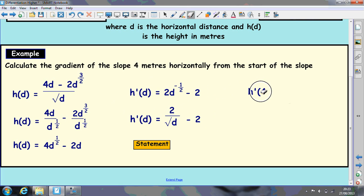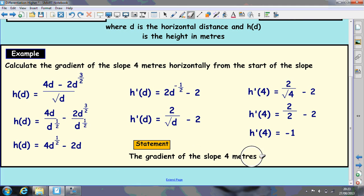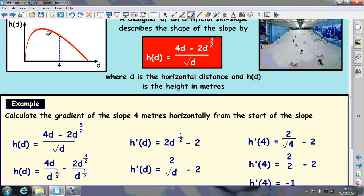So what we have here is h'(4) = 2/√4 - 2. Which comes to 2/2 - 2. This just goes to 1. So it's 1 - 2, which is -1. A statement to finish it off: The gradient of slope 4 meters after the start is -1. So that part there, this gradient, if you were to draw a tangent down here, would be -1.